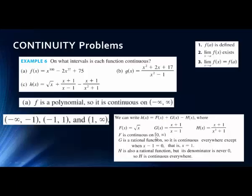So we have the intersection of these multiple continuity conditions: the function must be greater than or equal to zero (from the square root), and must exclude x equals 1 (from the rational piece). So H(x) is continuous on [0, 1) union (1, infinity).